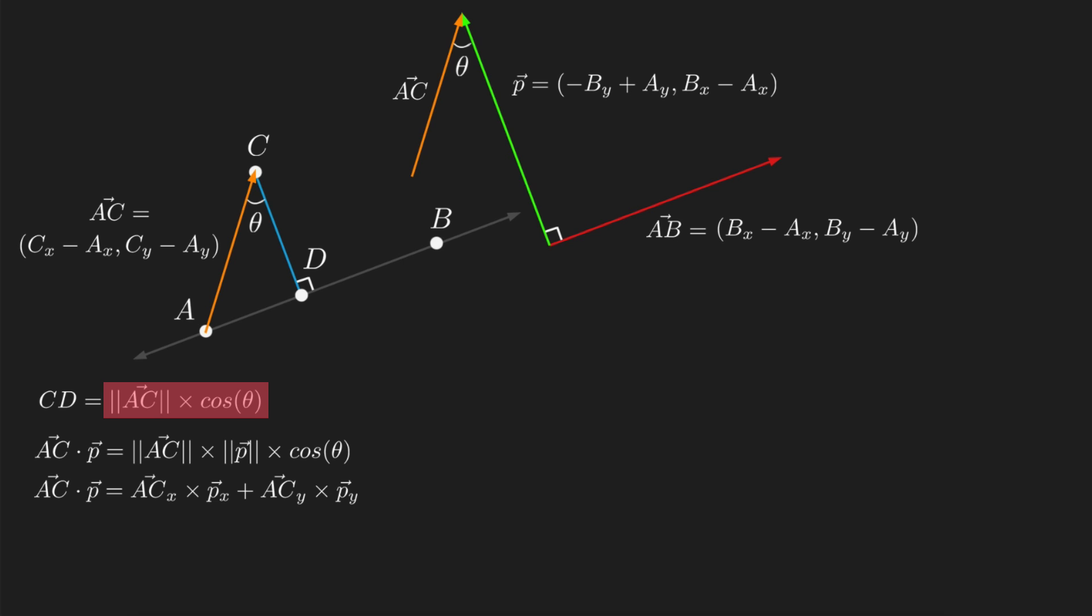So notice that the right side of our equation for CD is very similar to the right side of the first equation for AC dot p. In fact, if we multiply both sides of our equation for CD by length p, we get that CD times length p is equal to the dot product of AC and p.